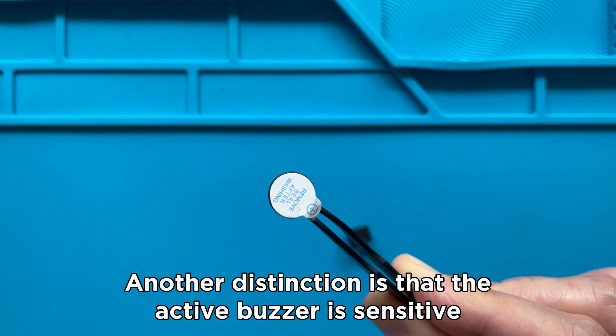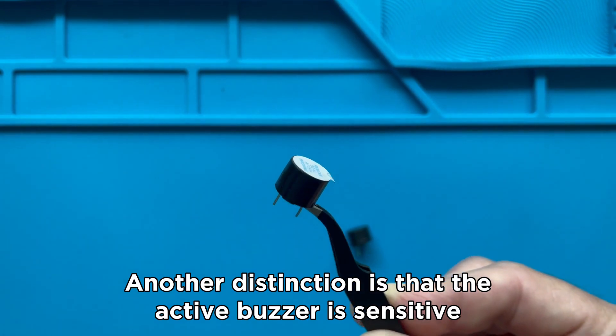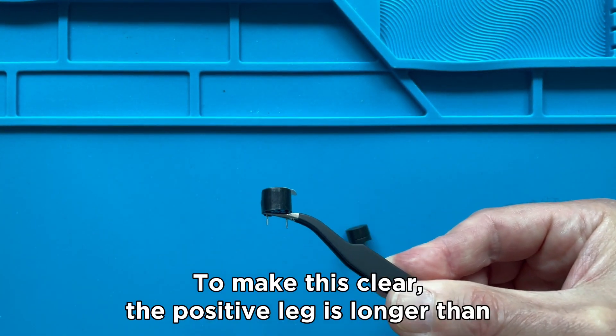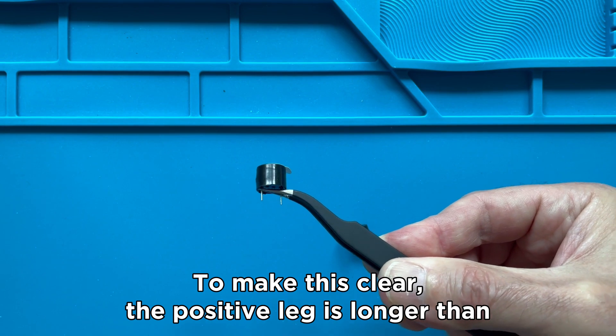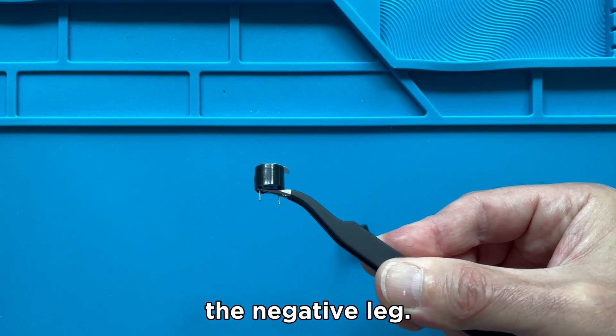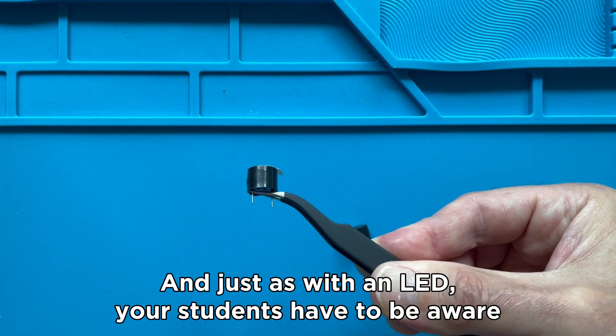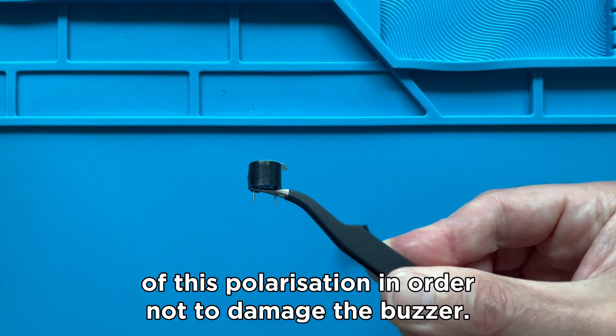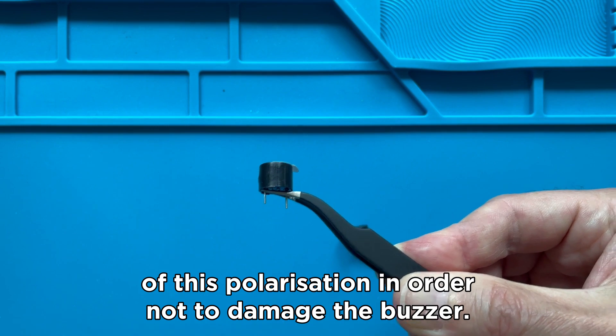Another distinction is that the active buzzer is sensitive to its polarization. To make this clear, the positive leg is longer than the negative leg. And just as with an LED, your students have to be aware of this polarization in order not to damage the buzzer.